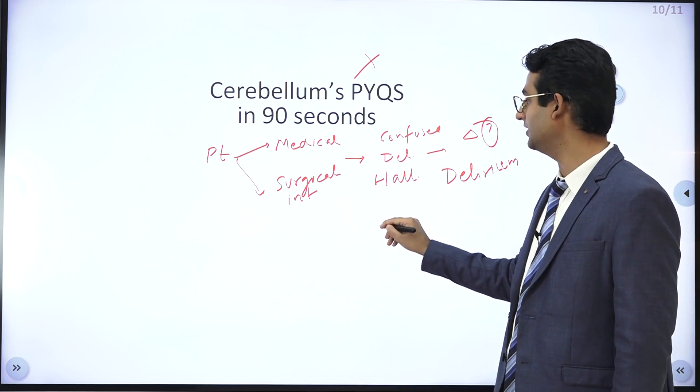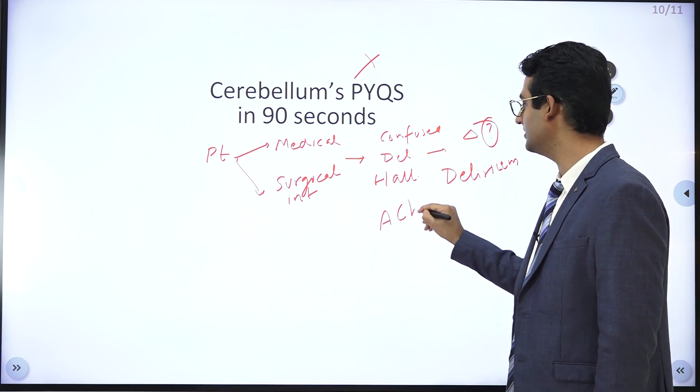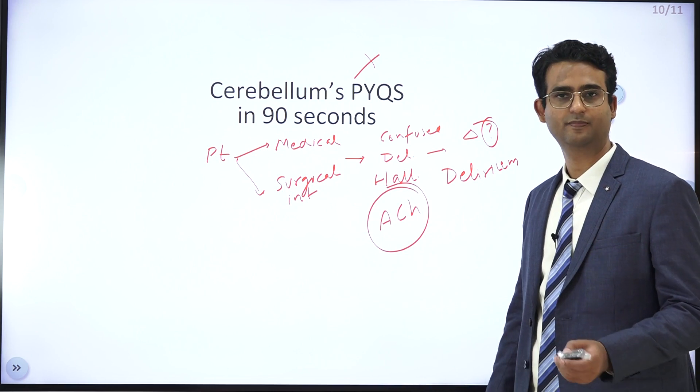Second previous year question: which neurotransmitter is involved in the development of delirium? Answer is acetylcholine. Please remember.